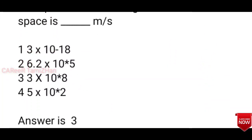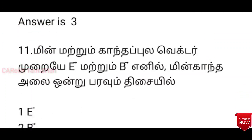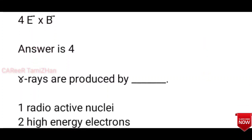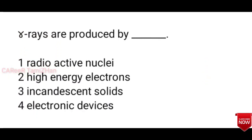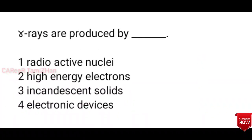The speed of electromagnetic waves in free space is 3×10⁸ meters per second. The electromagnetic wave consists of E vector and B vector. Gamma rays are produced by radioactivity and high energy electrons. The answer is high energy electrons.